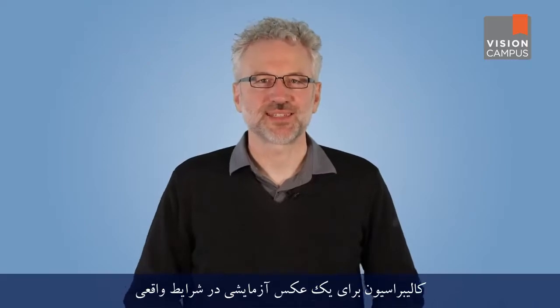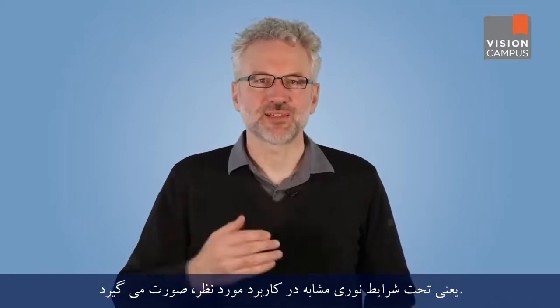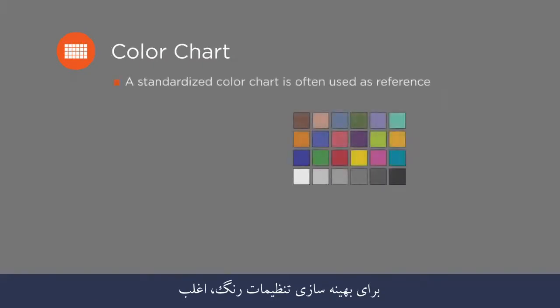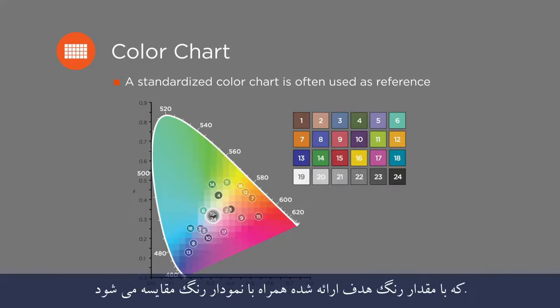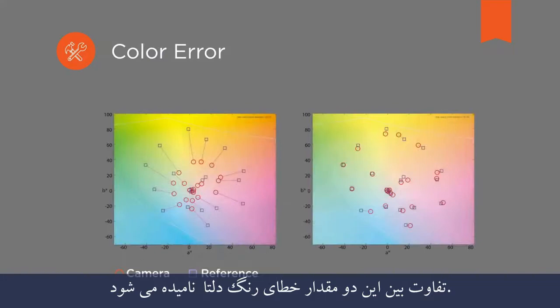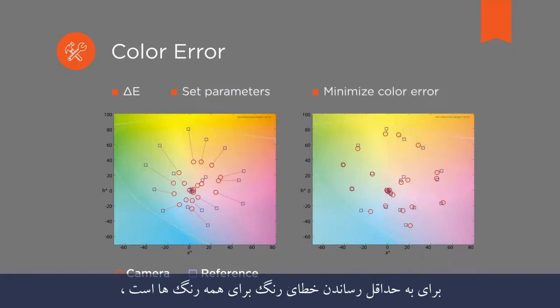Calibration is based on test images under real conditions, which means under the same light conditions as in the intended application. To optimize the color settings, a standardized color chart is often used as a reference. For each color patch on the color chart, the camera supplies a color value, which is then compared with the target color value provided together with the color chart. The difference between these two values is the color error delta E. The aim of the calibration process is to set parameters in the camera to minimize the color error for all colors.